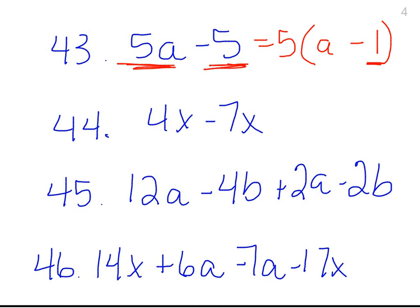Looking at number 44, here we are combining our like terms, and so 4x and negative 7x are alike, so all we have to do is we have to just add the coefficients, and we have 4 minus 7, and 4 minus 7 is negative 3, so we have negative 3x.